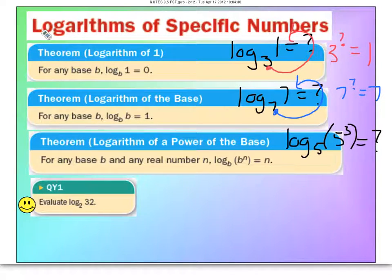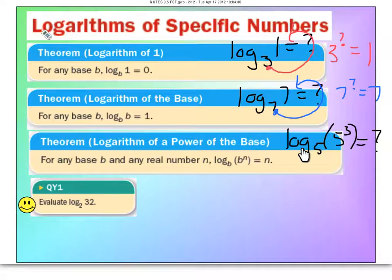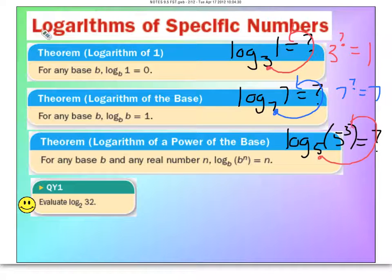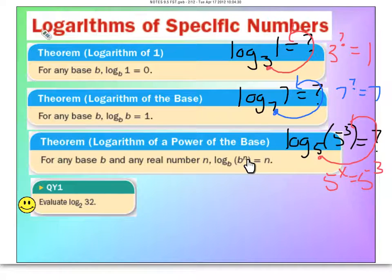The third one: log base B of B to the N will always equal N. Here's our example — log base 5 of 5 cubed. Set it equal to an unknown and rewrite it as an exponent: 5 to some power equals 5 cubed. You can tell the number has to be 3, and that's why they say it actually equals the exponent.